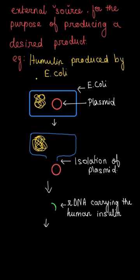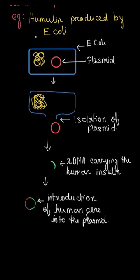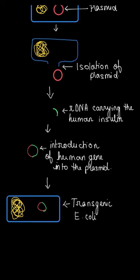Now the recombinant DNA carrying the gene that produces human insulin is being introduced. So this is the vector DNA or the recombinant DNA carrying the human insulin gene. Now this is incorporated into the plasmid.